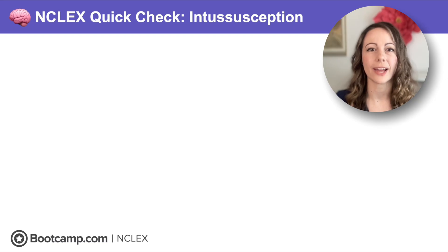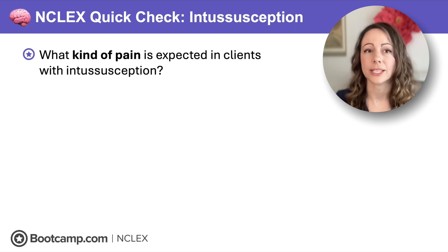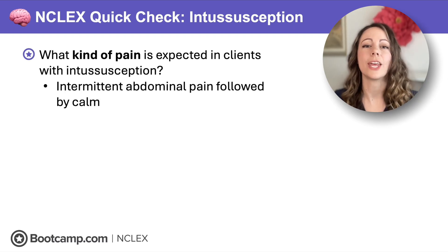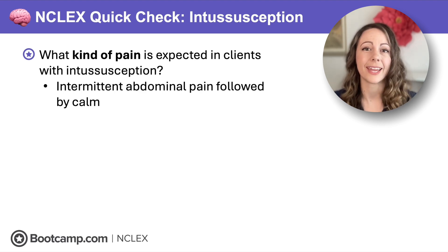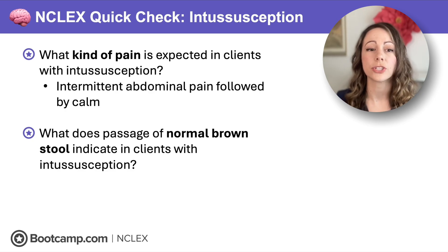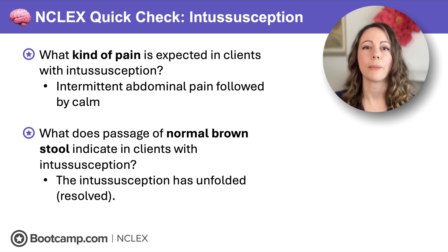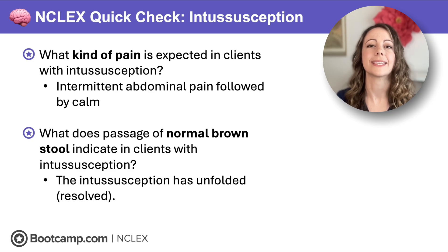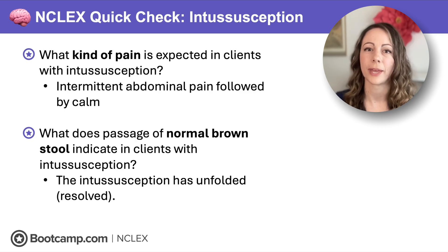NCLEX quick check: what kind of pain is expected in clients with intussusception? That's intermittent abdominal pain followed by calm — crying one second and relaxed the next. What does the passage of normal brown stool indicate in clients with intussusception? It indicates the bowel has unfolded and the condition is resolved. We need to tell the provider so they can change the plan of care.